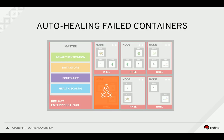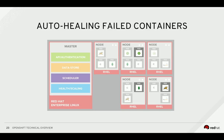It's also possible that an entire application node fails, and OpenShift can detect these types of failures as well. If an application node fails, the master will restart the pods that were running on the failed node on another healthy node that has enough capacity. When the pods pass their health checks, traffic will then be routed to the new pods automatically.